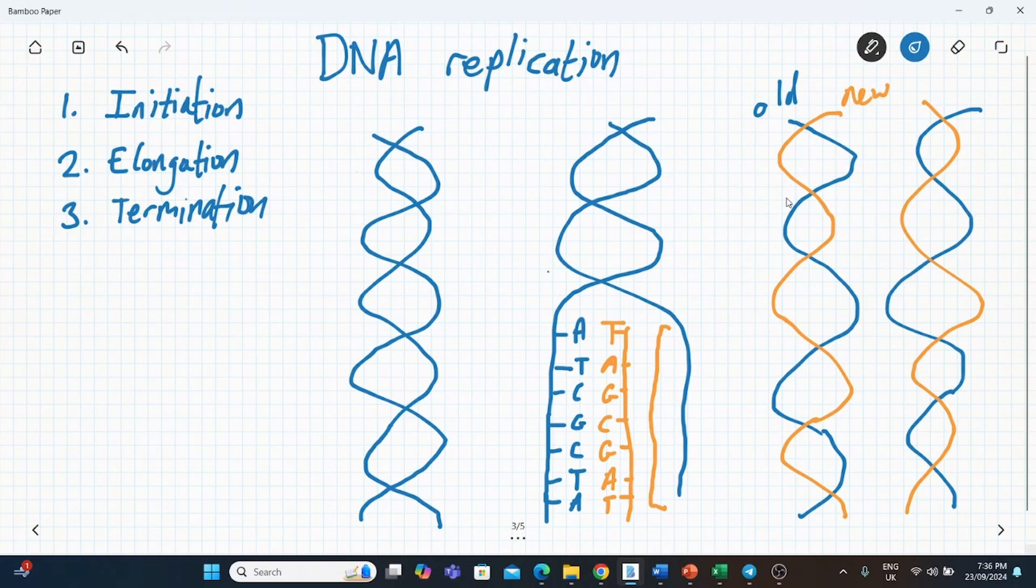So each new strand has a new strand as well as an old strand. And because the old strand is conserved, we call this semi-conservative replication. So DNA replication is indeed semi-conservative. So we've talked about initiation. Initiation is the unzipping of the DNA. Elongation is the adding of these bases. And then finally you've got to have termination. And this is where an enzyme comes and basically closes it all off.